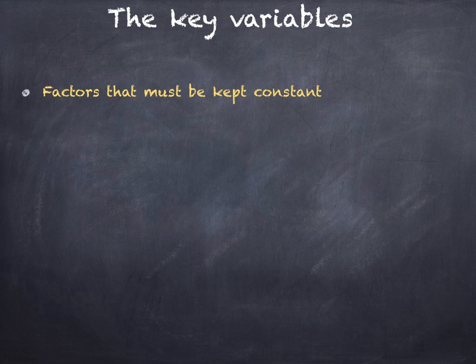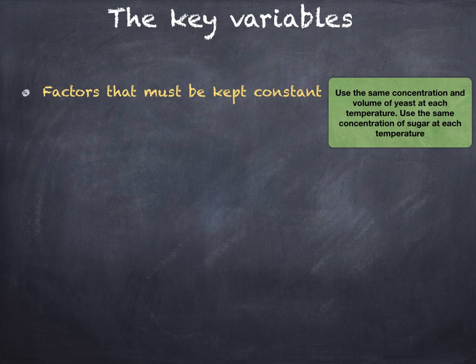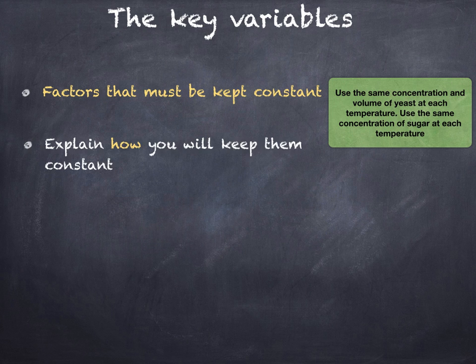Now the key variables are factors that must be kept constant. So for example, use the same concentration and volume of yeast at each temperature, and use the same concentration of sugar at each temperature. You need to explain how you will keep them constant.